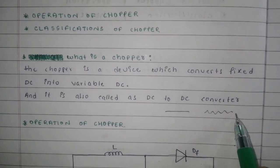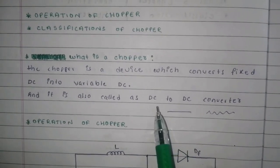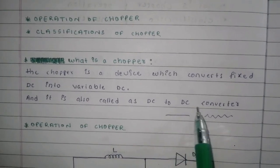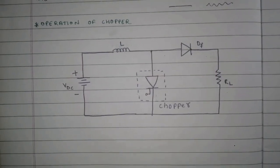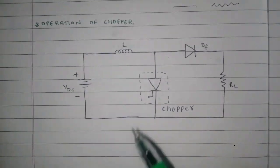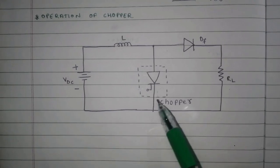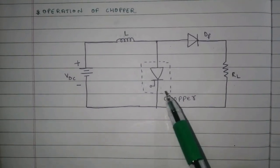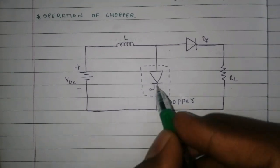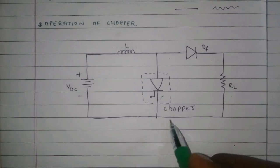The chopper input is fixed DC and the output is variable DC. For that reason, we call it a DC to DC converter. Now I am going to explain the operation of chopper. Here I have the circuit to explain its operation. In this circuit, the thyristor is the chopper.